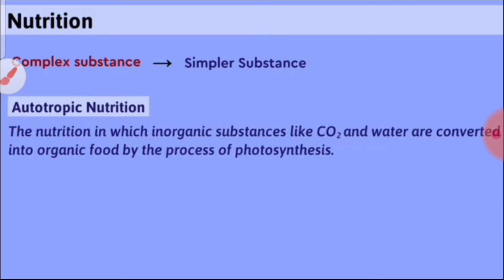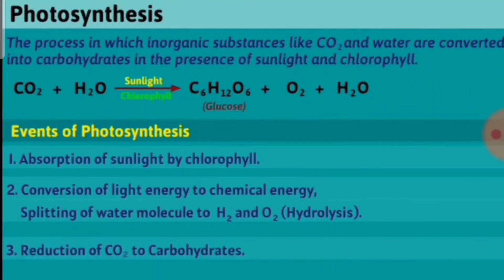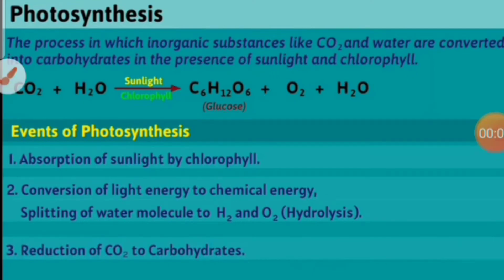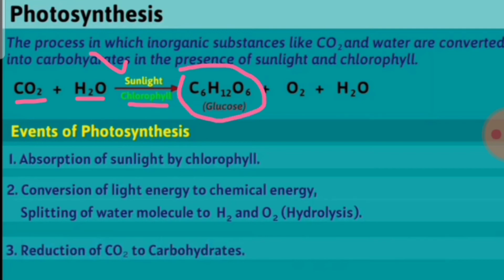In photosynthesis, glucose (C6H12O6) is one of the products formed by autotrophs. Plants utilize carbon dioxide and water in the presence of sunlight and chlorophyll in their leaves, and produce an organic carbohydrate called glucose, along with oxygen and water as byproducts.